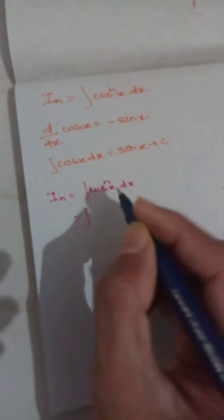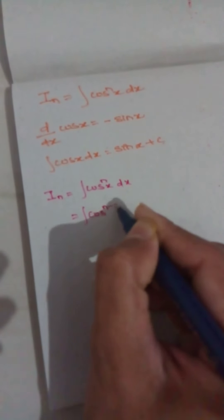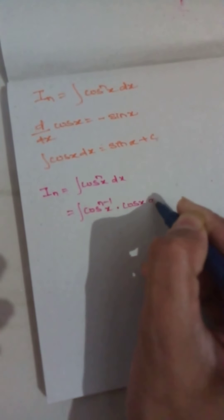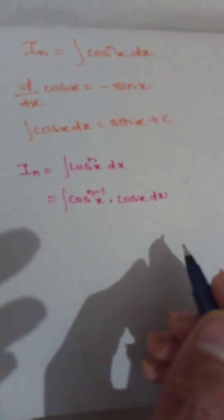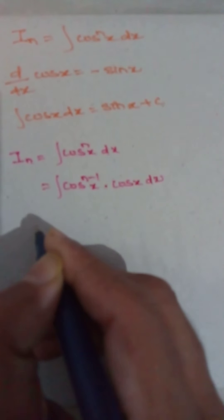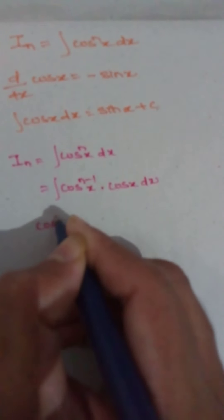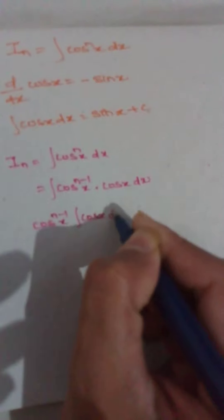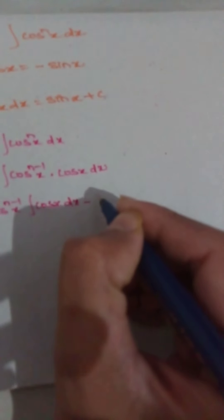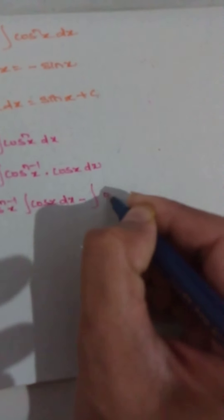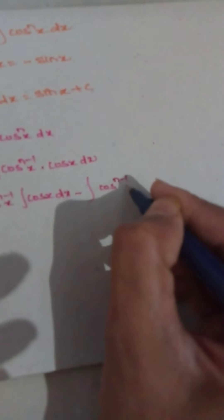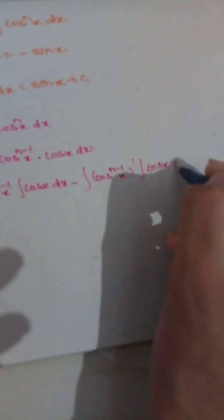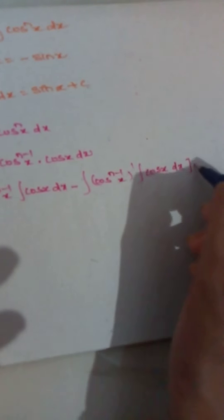That implies the integral of cos^(n-1)x · cos x dx. Now, we are going to apply integration by parts. Therefore, we take cos^(n-1)x as the first function: cos^(n-1)x · ∫cos x dx minus the integral of [d/dx(cos^(n-1)x) · ∫cos x dx] dx.